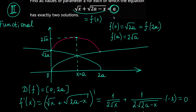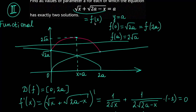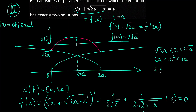Now we draw the right-hand side — a horizontal line y = A. For the equation to have exactly two solutions, this line must cross the graph of f(x) at exactly two points, which happens when √(2A) ≤ A < 2√A. Squaring and dividing by A (which is positive), we again obtain A ∈ [2, 4) — the same answer.